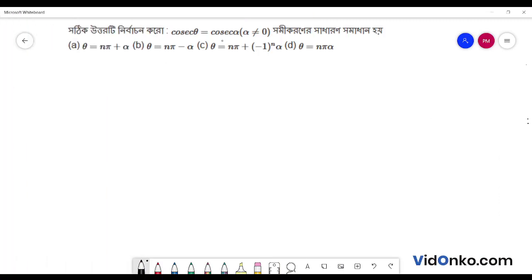cos theta is equal to cos alpha. If alpha is not equal to 0, then the option is: a) n pi plus alpha, theta is equal to b) theta is equal to n pi minus alpha, option c) n pi plus minus 1 whole to the power n into alpha, option d) n is equal to n pi alpha. Let's see,